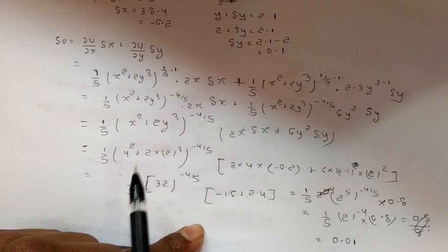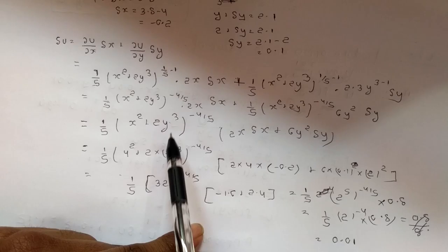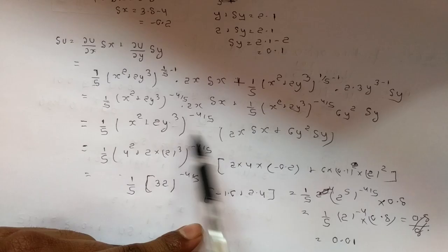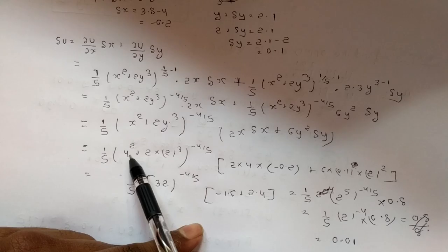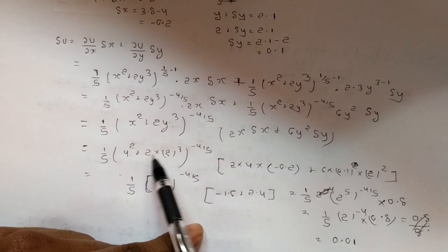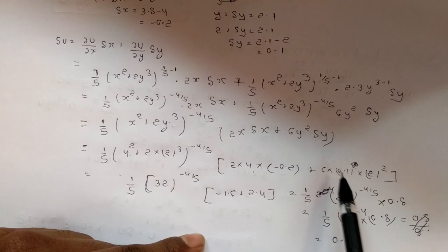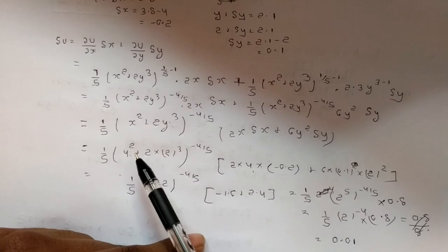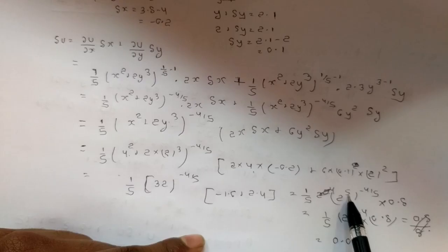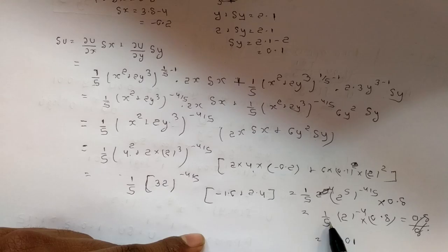Sorry, अगर ये part visible न हुआ हो तो मैं फिर से explain करता हूँ। हमने common लिया, फिर x = 4, y = 2, Δx = −0.2, Δy = 0.1 की value put की। 4² + 2·2³ = 16 + 16 = 32 = 2^5, power (−4/5) gives 2^(−4). Then (1/5)·2^(−4)·0.8 — 5 and 5 cancel — giving (1/5)·2^(−4)·0.8.